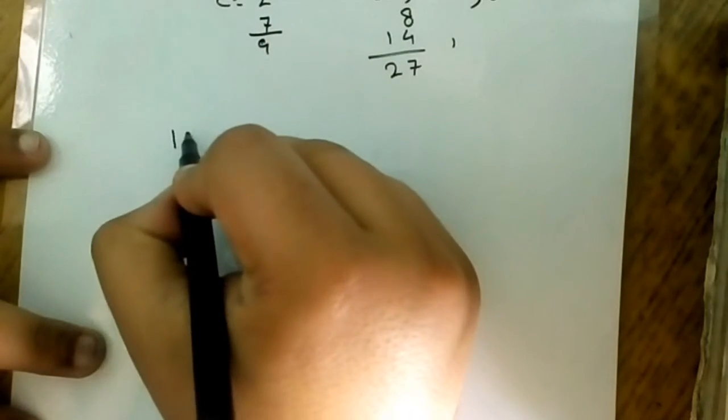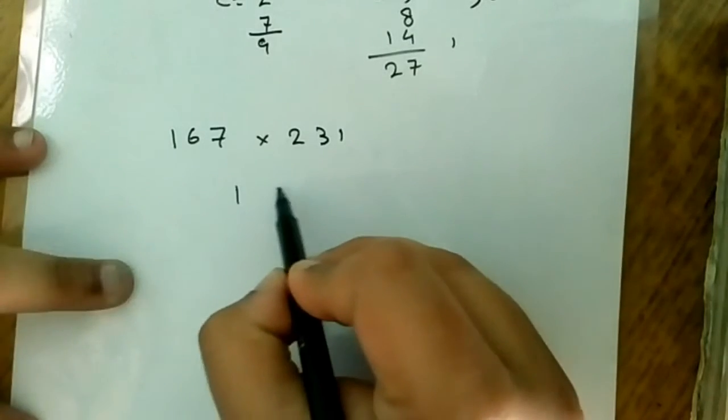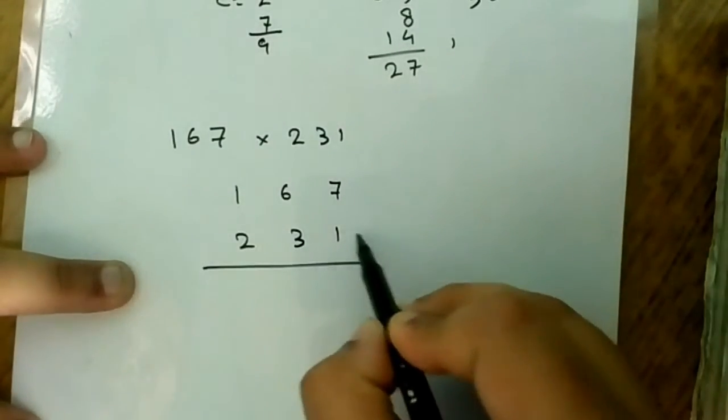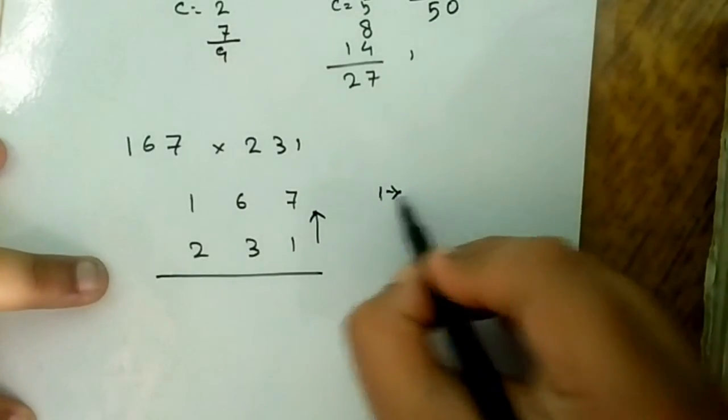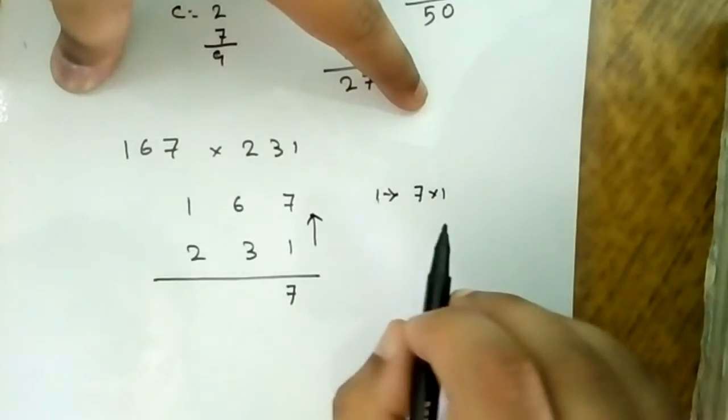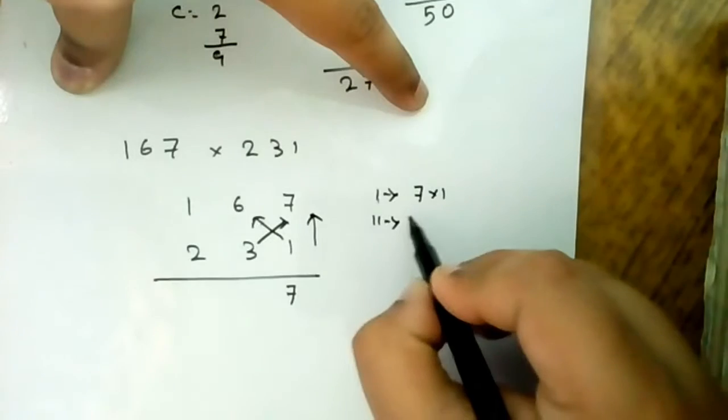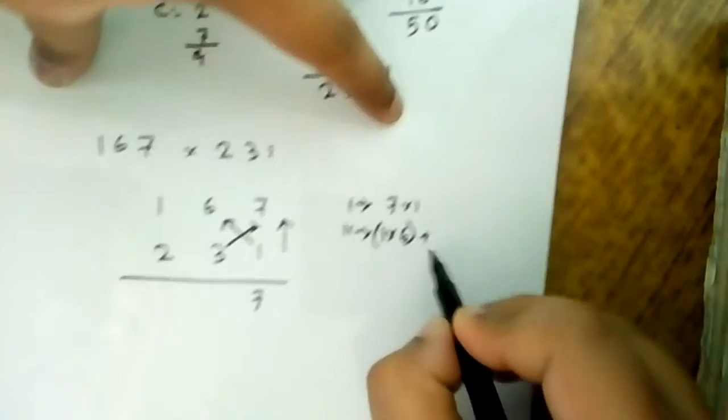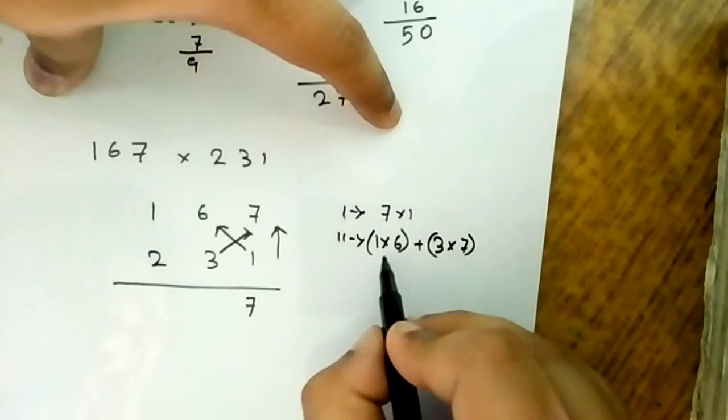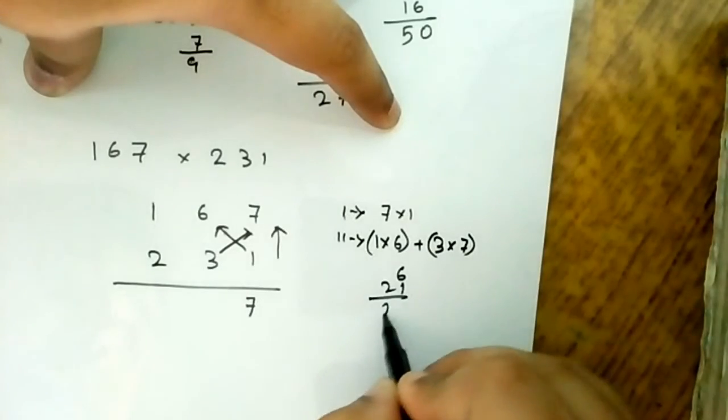Let's say 167 into 231. In the first process, 7 into 1 is 7, there is no carry. In the second process, 1 into 6 plus 3 into 7. 1 into 6 is 6, 7 into 3 is 21, so 27. I write 7 and the carry is 2.